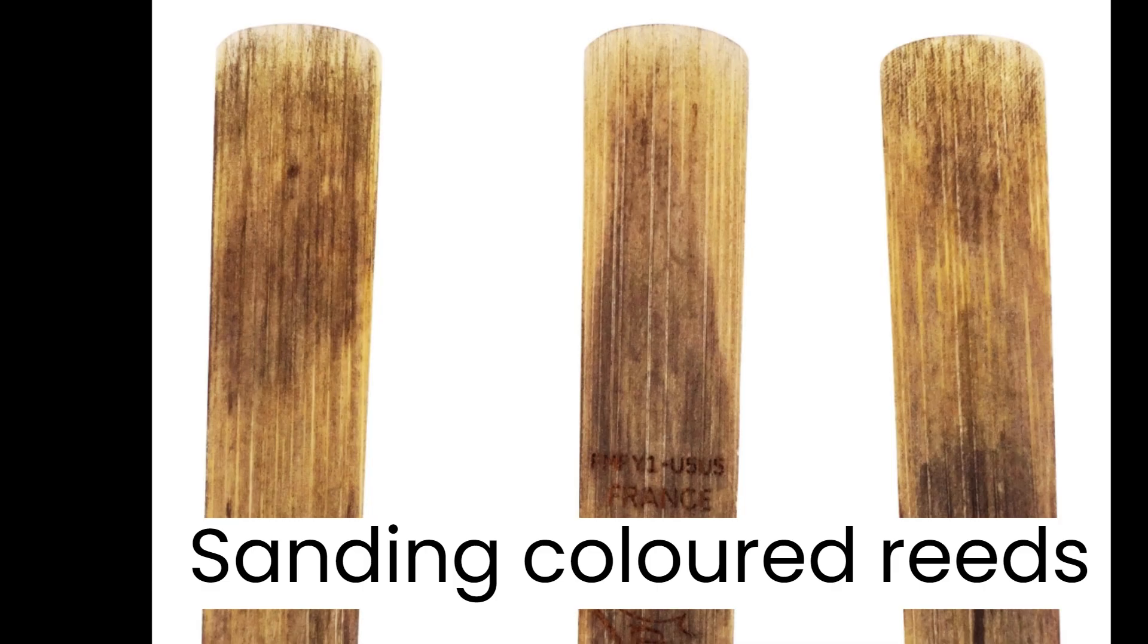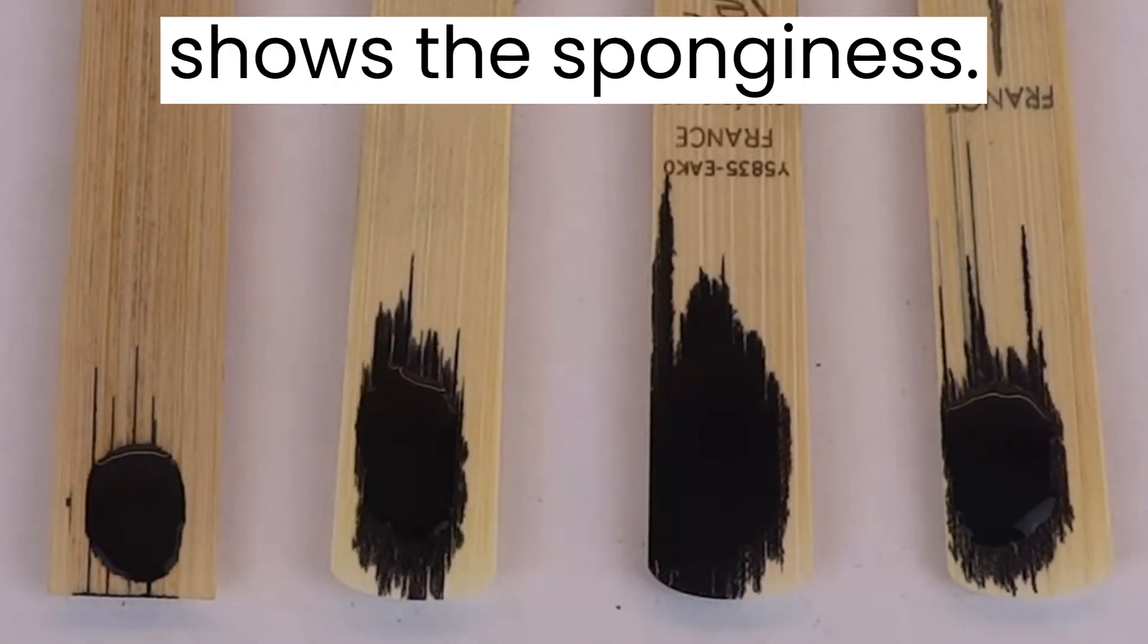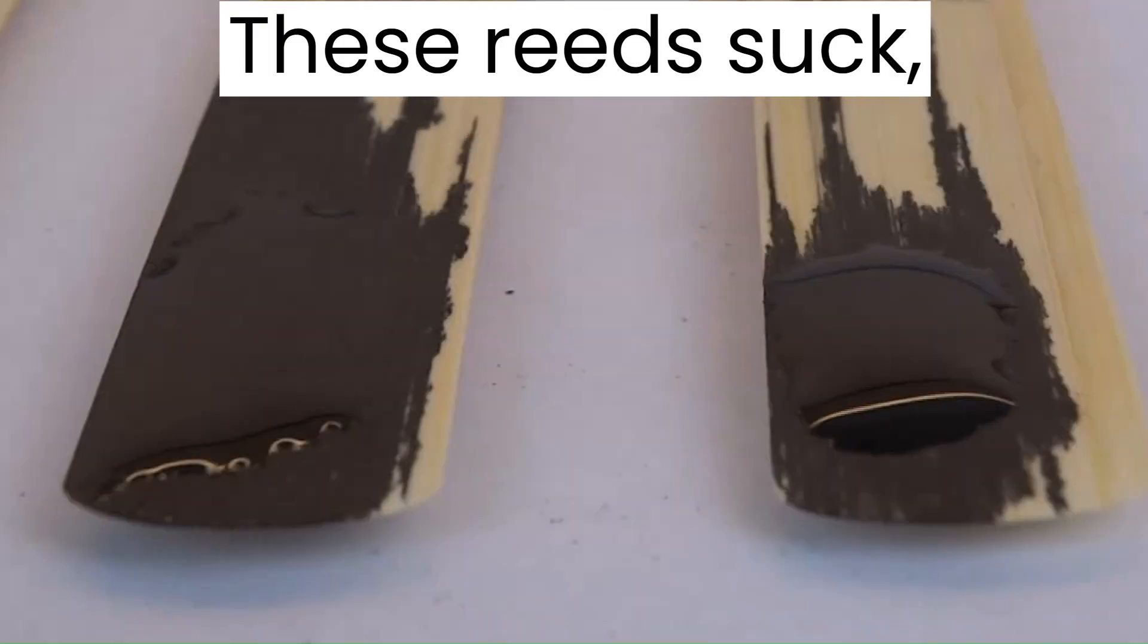Sanding colored reeds reveals the bumpy finish. A two-minute ink test shows the sponginess. These reeds suck.